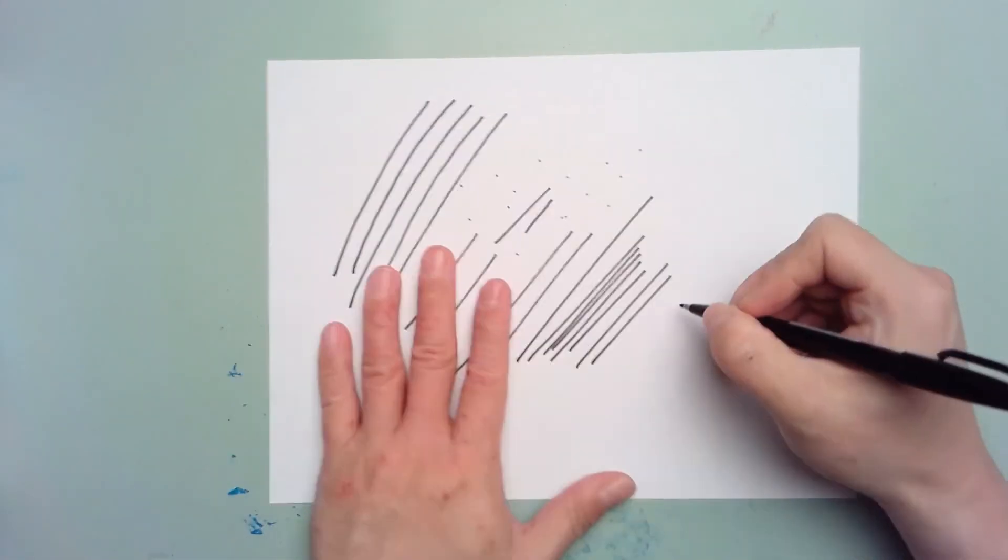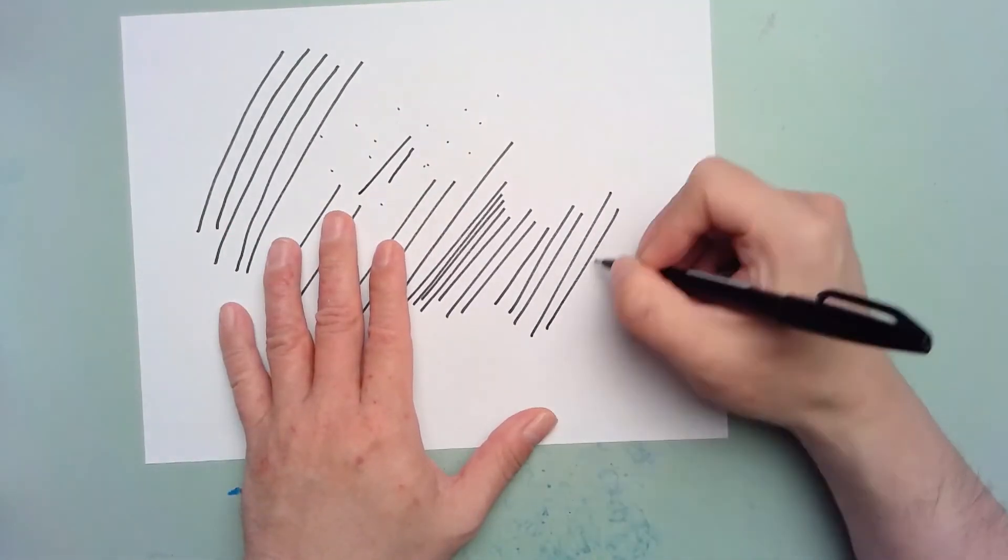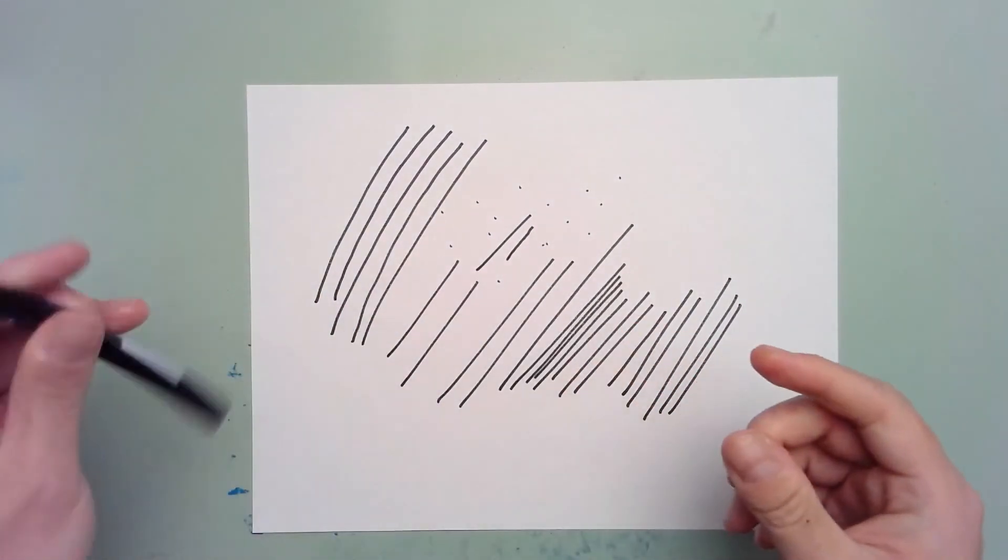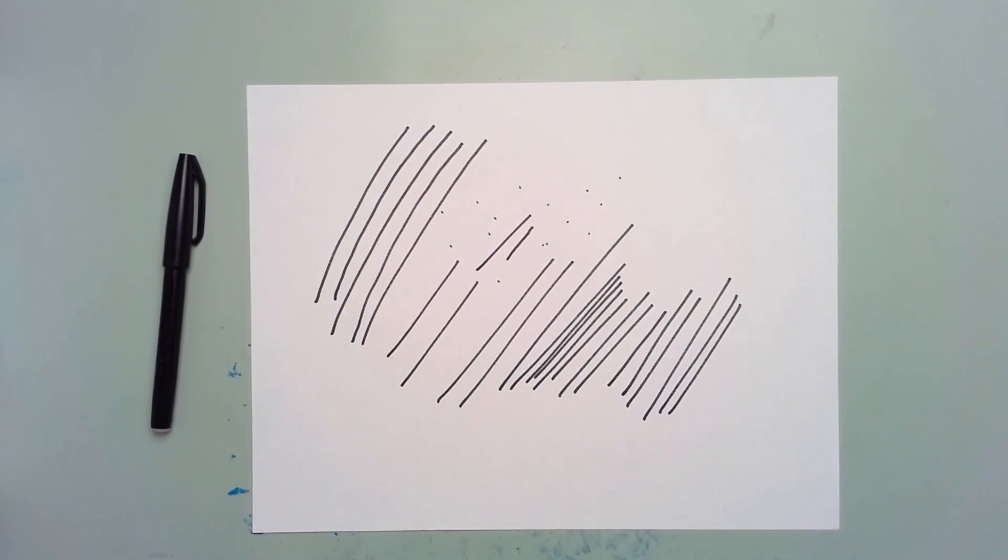As you can see, a proper pen grip, drawing angle, and locked wrist will allow you to execute smoother and more confident and controlled lines.